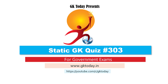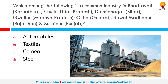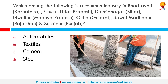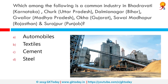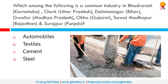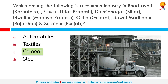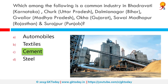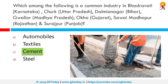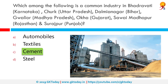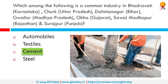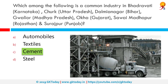Which among the following is a common industry in Bhadravati (Karnataka), Dalmianagar (Bihar), Gwalior (Madhya Pradesh), Okha (Gujarat), Sawai Madhopur (Rajasthan), and Surajpur (Punjab)? That would be the cement industry. The Indian cement industry comprises 125 large cement plants with an installed capacity of 148.28 million tons and more than 300 mini cement plants with an estimated capacity of 11.10 million tons per annum.